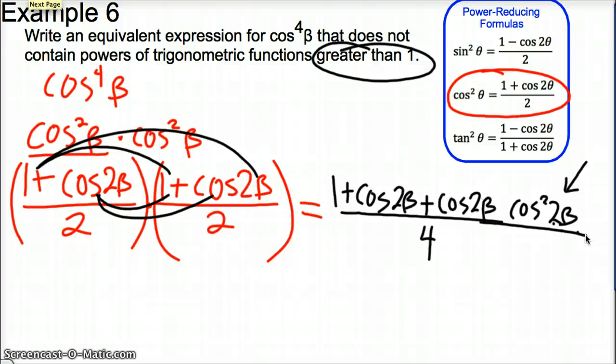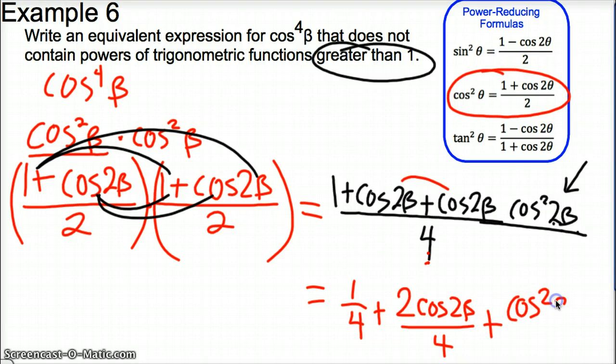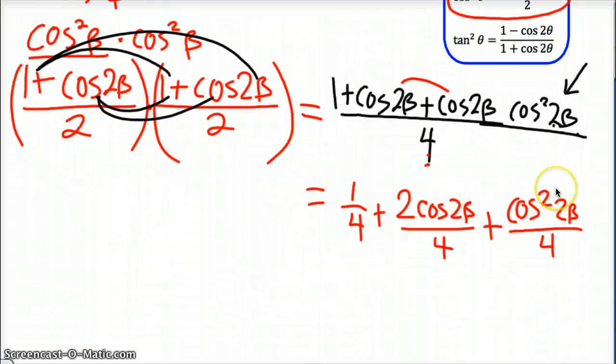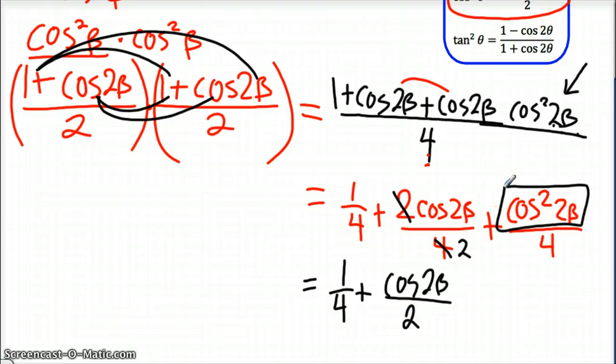So I'm going to simplify the other pieces out and make them all over 4. I also see that those can be combined. So I'm going to rewrite the first part of my expression as 1 fourth. So once again, I'm going to separate them from the denominator, plus 2 cosine 2 beta over 4, and then plus cosine squared of 2 beta over 4.